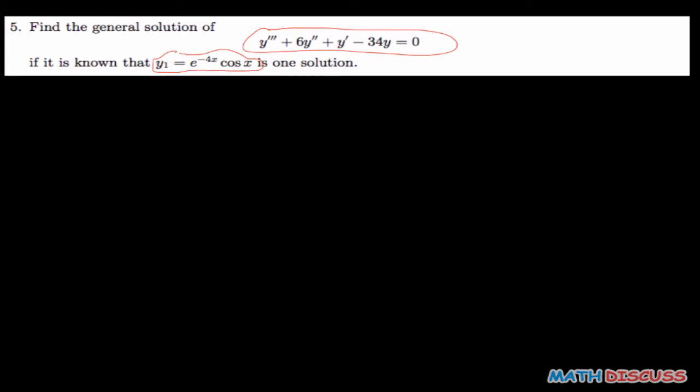The thing is, you might easily get confused here, but what you need to observe is that you have been given that y₁. Now let's write what we're given. So this is the solution: we have y''' + 6y'' + y' - 34y = 0. This is what we're given. Now we are told that y₁ is a solution, that is, y₁ = e^(-4x)cos(x) is the solution of this differential equation.